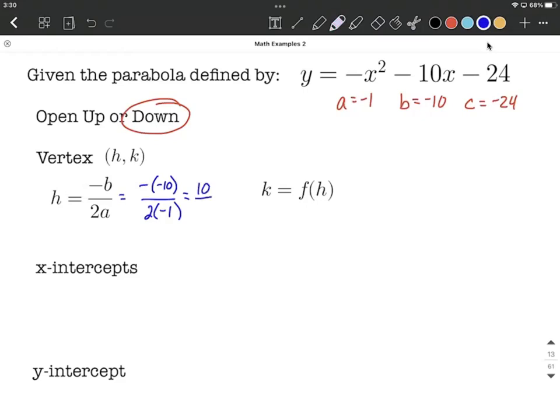Okay, so we have positive 10 over negative 2. A little reducing down, we're going to get negative 5 for the x value for our vertex. But we need a y value to go with this. So to get this, what we want to do is substitute that negative 5 back in for each one of the x's and evaluate the original function.